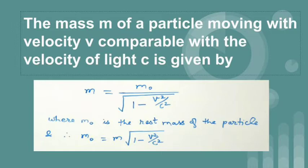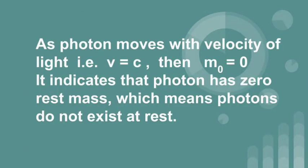Here as photon moves with velocity of light that is v is equal to c then m0 is equal to 0. It indicates that photon has 0 rest mass which means photons do not exist at rest.